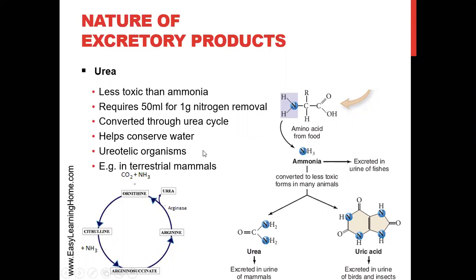Organisms that produce urea as their main nitrogenous waste are called ureotelic organisms. Why do we produce urea? To excrete 1 gram of nitrogen as ammonia requires 500 ml of water, but as urea it requires only about 50 ml of water — a much more limited amount. The nitrogen is excreted via the urea cycle, which is the pathway used to remove nitrogen this way.